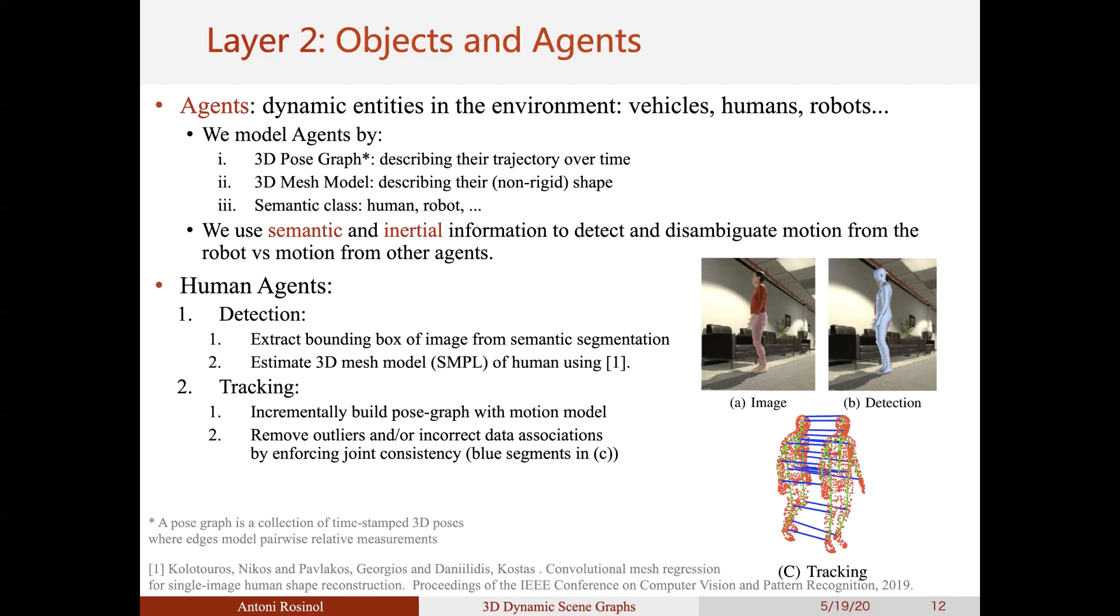For tracking, we build a pose graph with a motion model, such as zero velocity model, for example, where we incrementally add a new vertex upon a new human detection. We further avoid the potential outliers from the detection model and also solve the data association problem by developing a joint consistency approach, which accepts new measurements only if the joints displacements between 3D mesh models are reasonable given the time between detections.